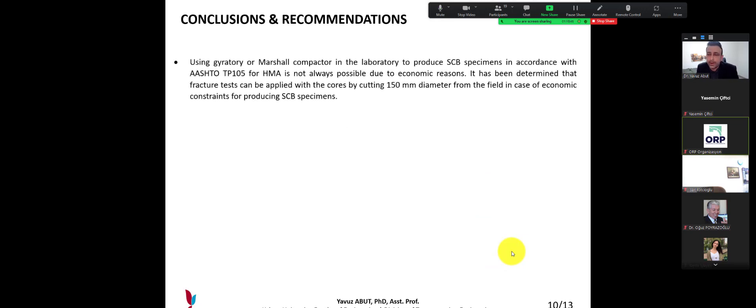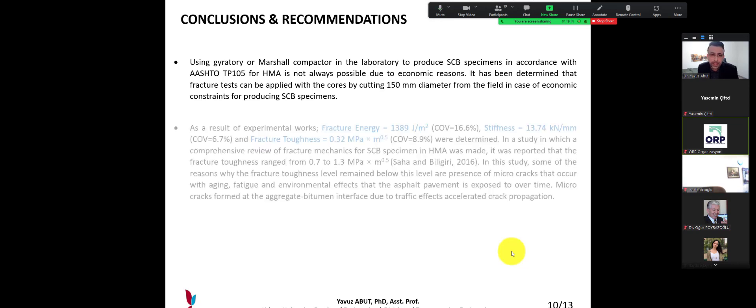Conclusions and recommendations. Using gyratory or Marshall compactor in the laboratory to produce SCB specimens in accordance with AASHTO TP-105 for hot mix asphalt is not always possible due to economic reasons. It has been determined that fracture tests can be applied with cores by cutting 150 mm diameter from the field in case of economic constraints for producing SCB specimens.